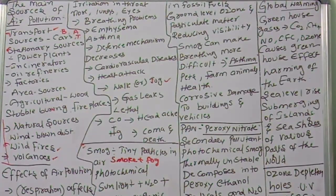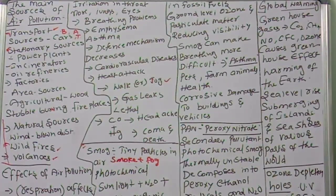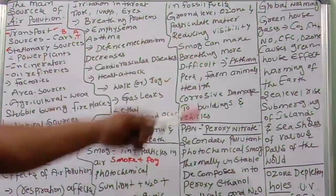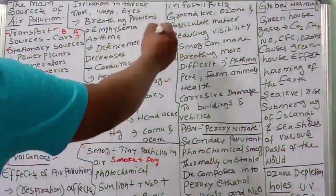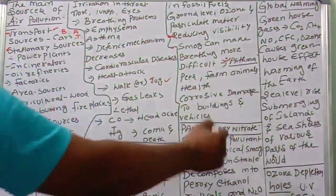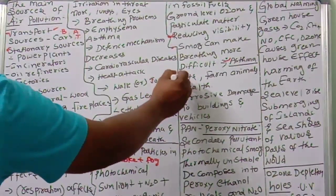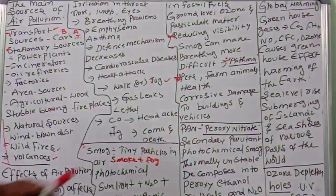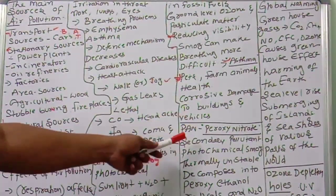Smog is the result of a photochemical reaction involving sunlight, nitrous oxides, and volatile organic compounds in fossil fuels, producing ground-level ozone and particulate matter. Effects include reducing visibility, making breathing more difficult, causing asthma, and affecting the health of pets and farm animals. Corrosive damage to buildings and vehicles also takes place.